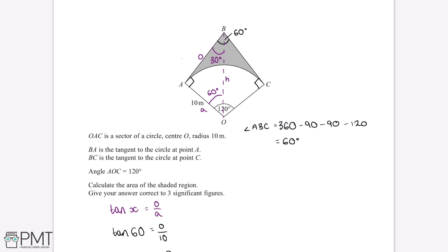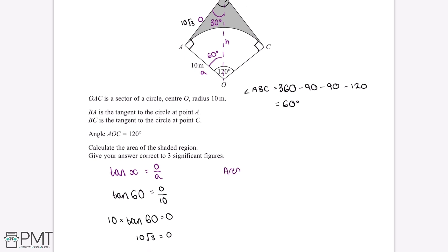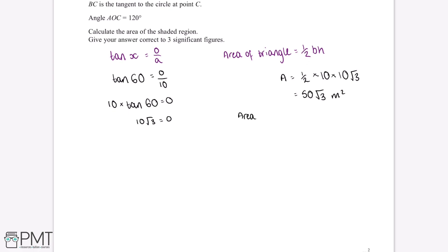Both triangles are exactly the same — just reflected along the centre line. So if we work out the area of the left triangle and double it, we get the full quadrilateral area. Area of triangle equals a half times base times height, so half times 10 times 10√3, giving 50√3 m². Doubling this gives us 173.21 m².